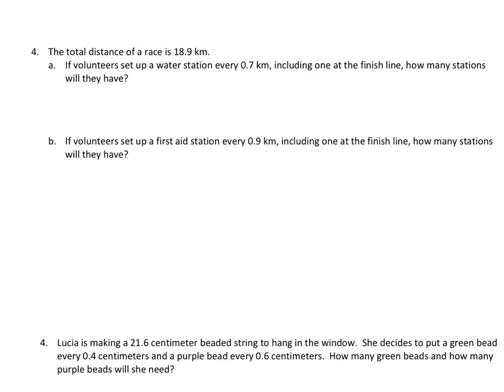Now we're going to do a few word problems. And note that I have two sets of word problems here. I've got number 4 from the practice set, which is an awful lot like number 4 in the homework, which is one of the more complex homework problems. Let's take a look at this. It says, if volunteers set up a water station, excuse me, the total distance of the race is 18 and 9 tenths kilometers. If volunteers set up a water station every 7 tenths of a kilometer, including one at the finish line, don't let that fool you. That doesn't complicate the problem at all. How many stations will they have? We're not going to have one at the starting point, but we will have one at the finish line.